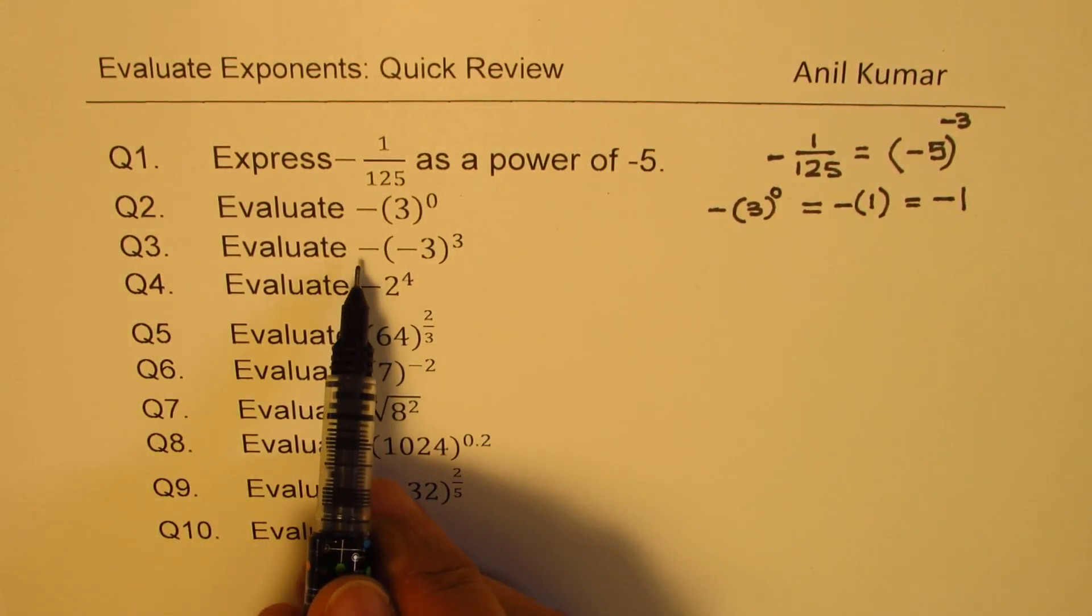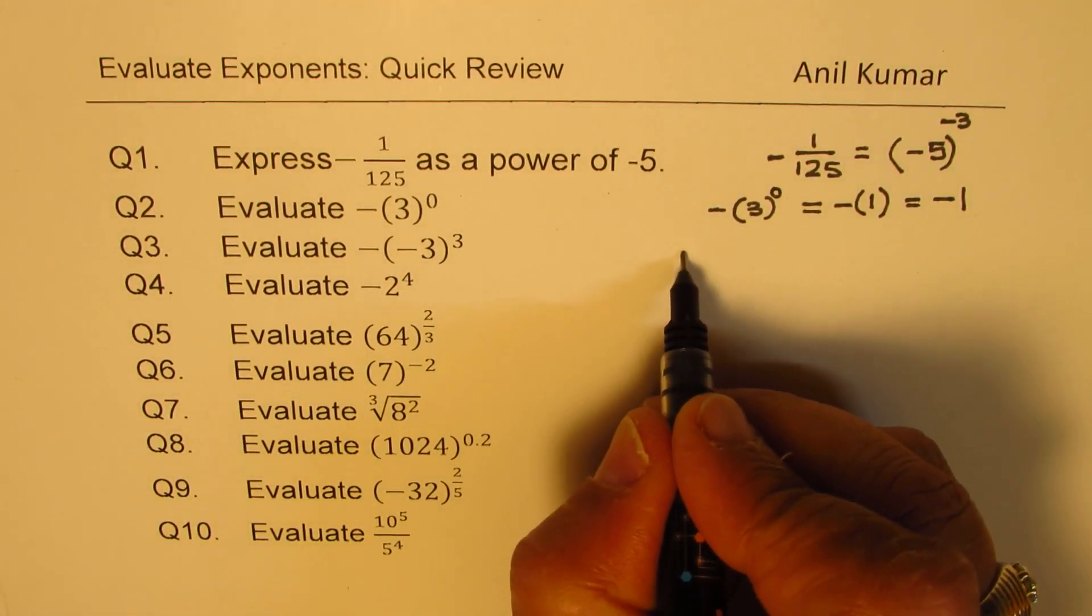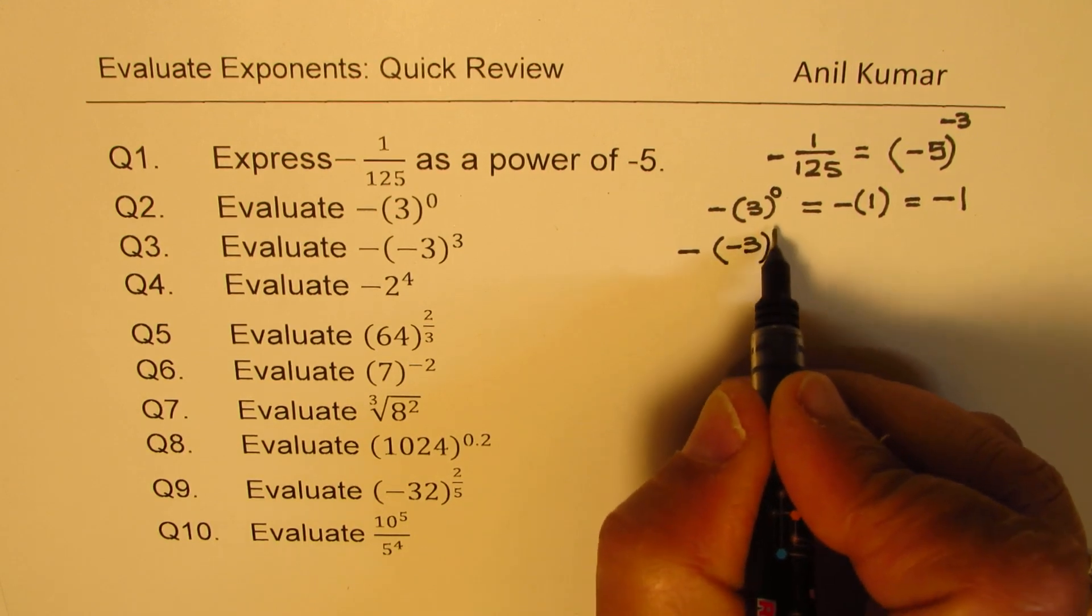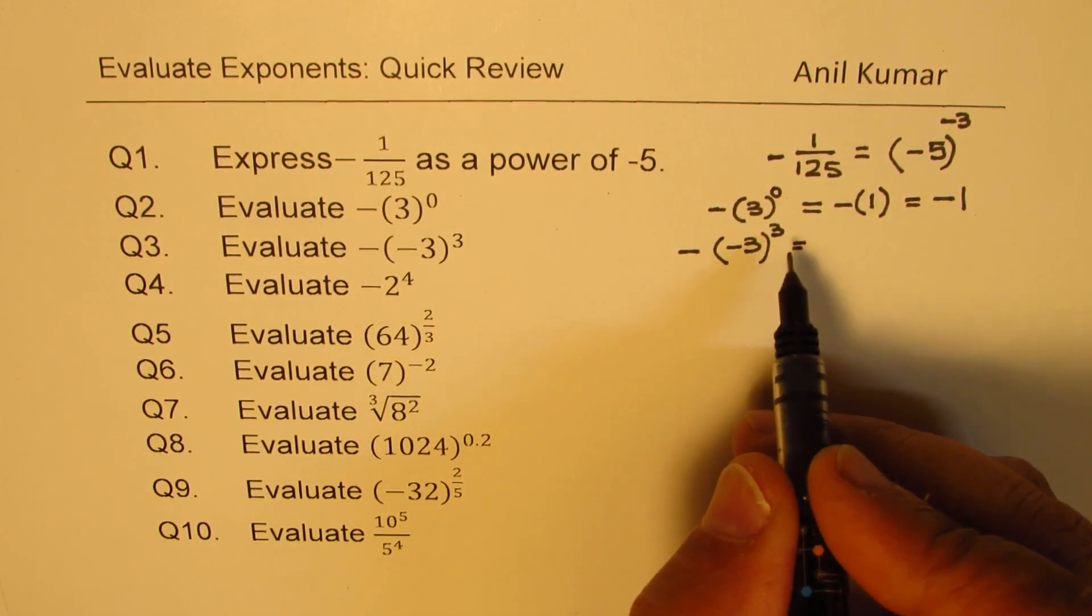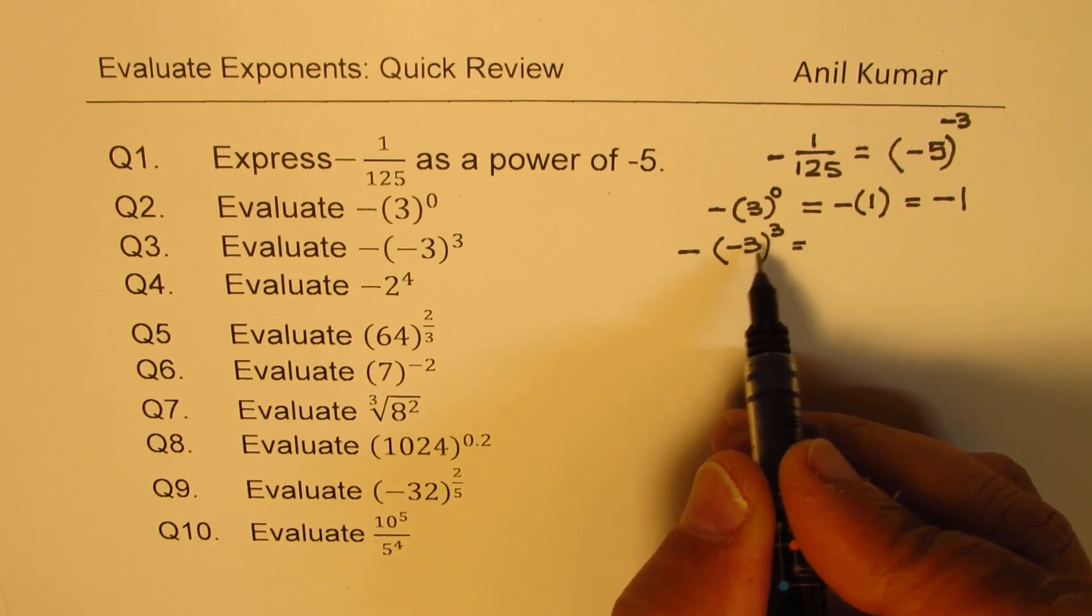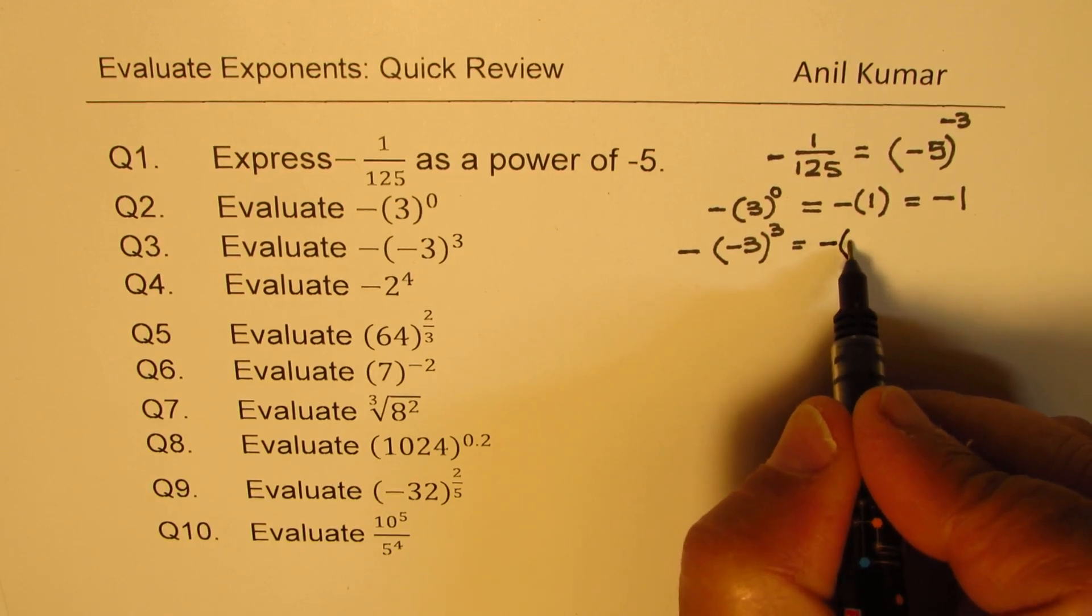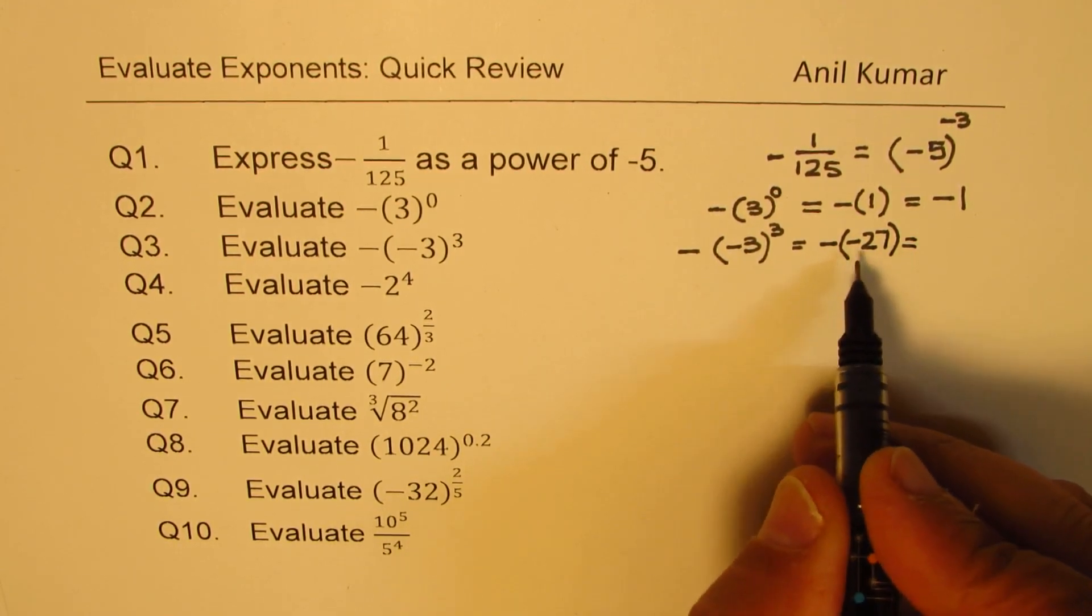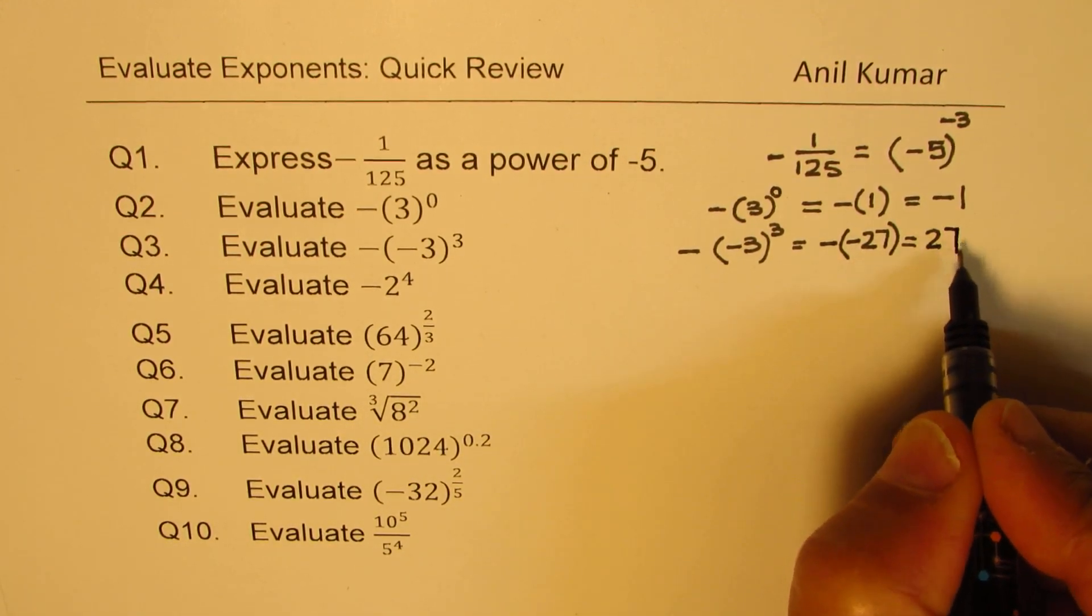The next one here is minus of minus 3 cubed. So there is minus outside, and then we have minus 3 cubed. Cube of 3 is 27, and negative to an odd power will be negative. So it is minus of minus 27. And when you open the bracket, minus and minus becomes positive. So it becomes 27.